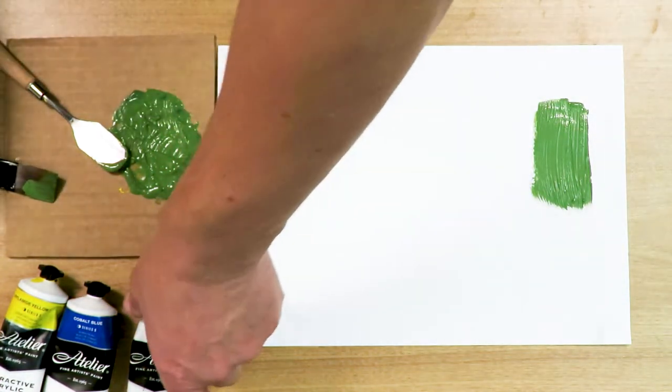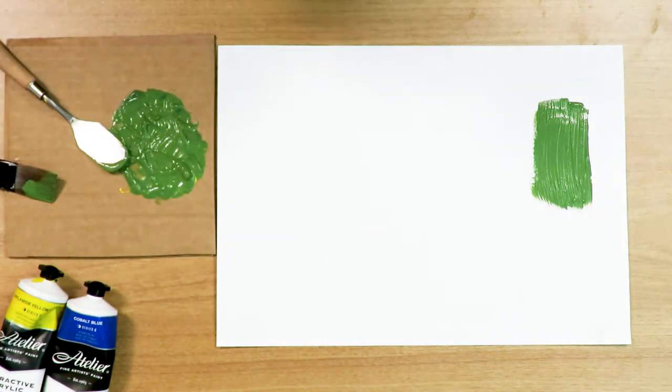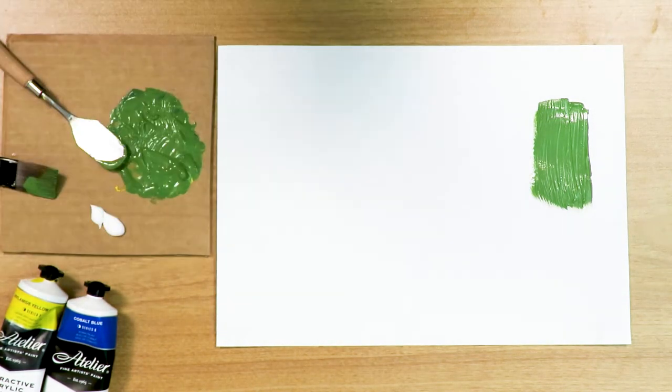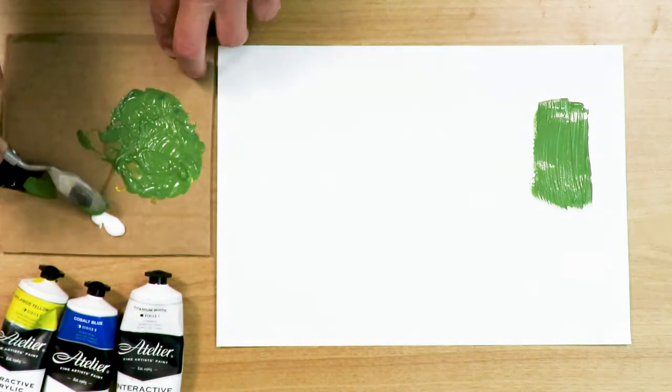Alright, then we're going to add a bit of white to make it a bit lighter. Put the white there and we'll add small amounts as we go along.